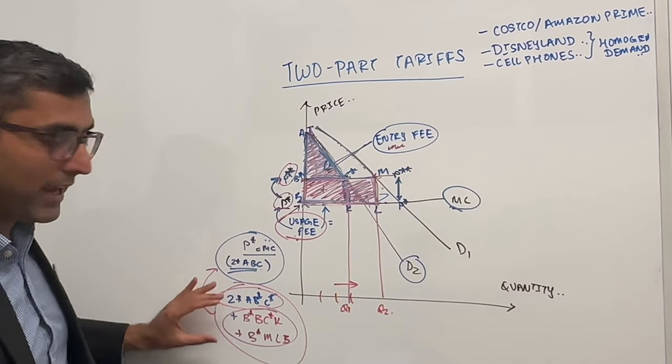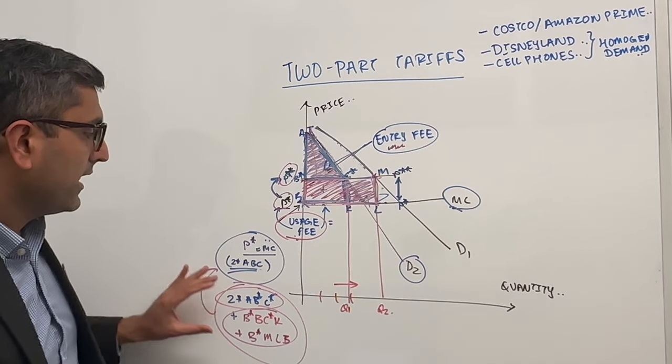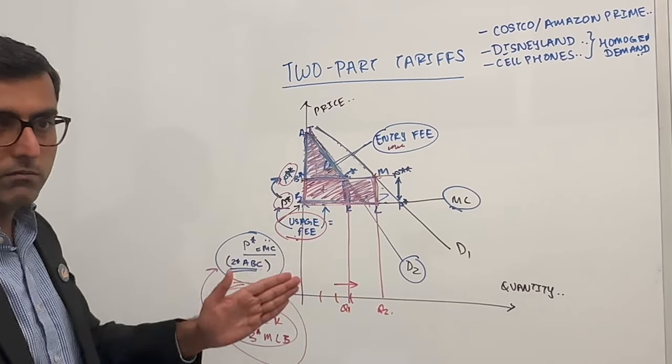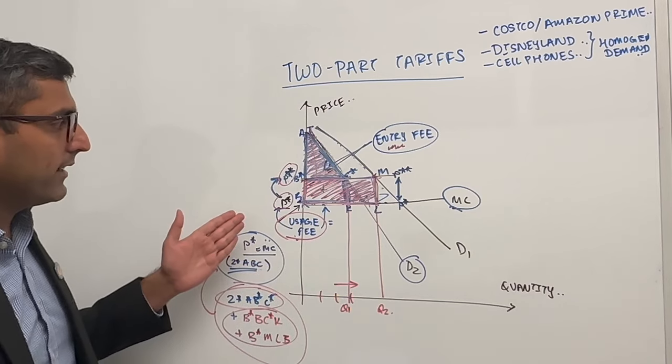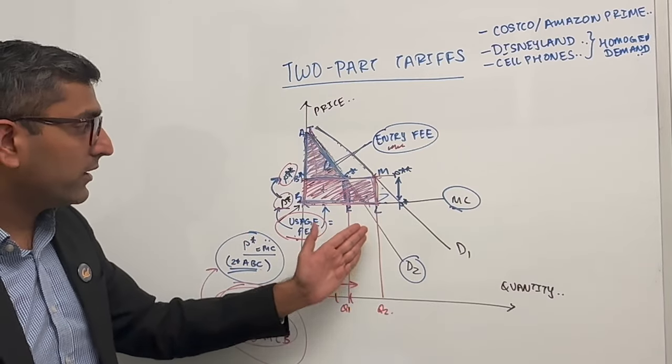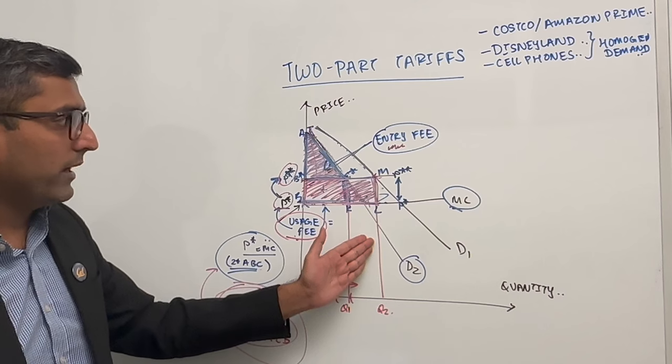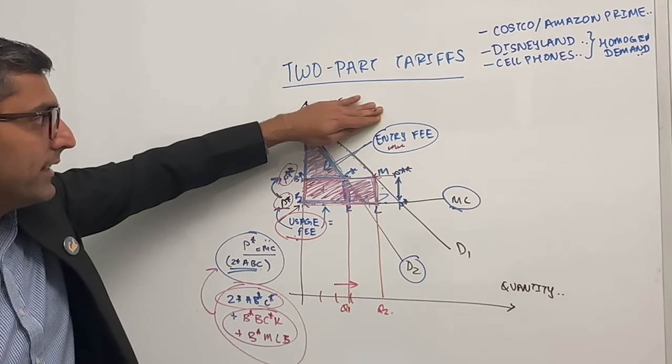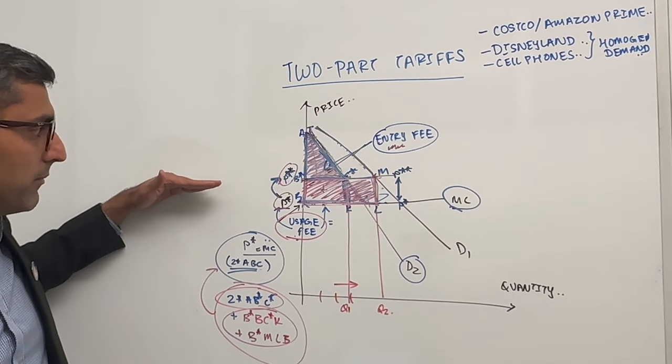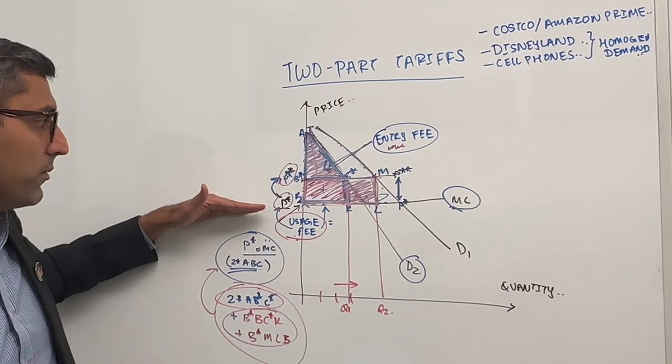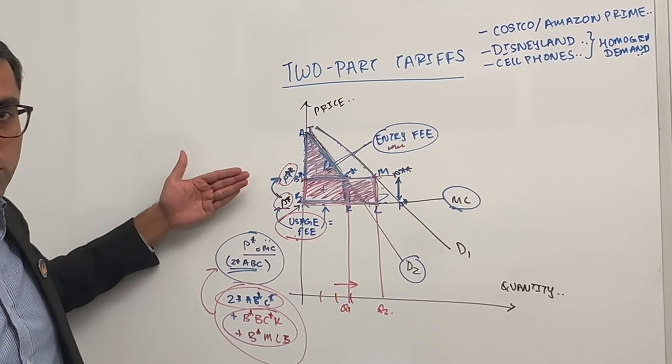To get maximum profit for certain combinations, you'll have to play around with price and see what, and know what your demands are for your customers. If you know you have a homogeneous demand, then it's probably better to charge a much higher entity and then the price equals mc. Your usage fee is equal to marginal cost.